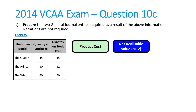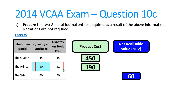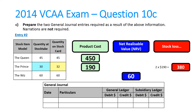The second entry — it asked for two — is all to do with the stock loss. We figured out which value to use: product costs for the Queen, product costs for the Prince, but net realizable value for the Whiz. For this particular item, there's a discrepancy between the stock card and the stock take whereby I've lost two units — I should have 32, but I've only got 30. I need to write a stock loss of two units using the lower of cost and net realizable value. I'll value each unit at $190, so two missing units at $190 is $380. The journal entry is a debit to stock loss and a credit to stock control.